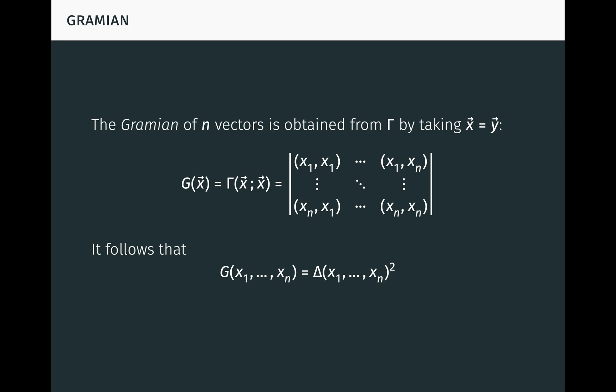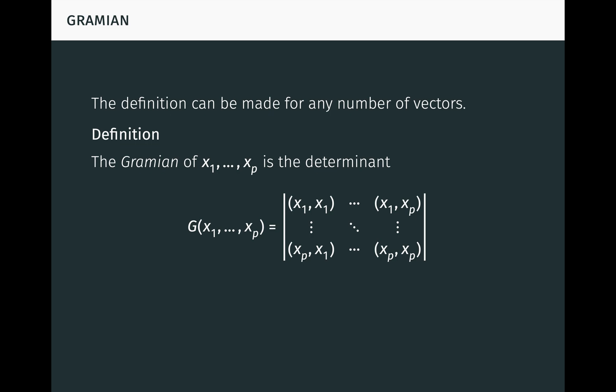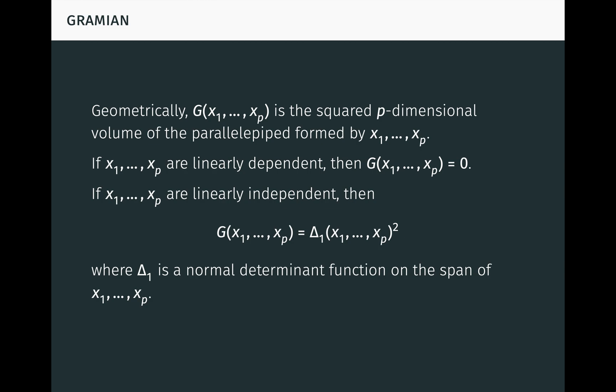So this is the Gramian of n vectors, where n is the dimension of the ambient space. But what about a different number of vectors? Importantly, the same definition can be made for any number of vectors. The Gramian of vectors x1 to xp, where p is not necessarily the dimension of the ambient space, is just the determinant of their inner products, as seen here. Note in particular that the Gramian of a single vector x is just the inner product of x with itself. Geometrically, the Gramian of x1 to xp is the squared p-dimensional volume of the parallelepiped formed by x1 to xp. If x1 to xp are linearly dependent, then the Gramian is zero, since its rows and columns are linearly dependent. On the other hand, if x1 to xp are linearly independent, then the Gramian of x1 to xp is delta₁ of x1 to xp squared, where delta₁ is a normal determinant function on the p-dimensional span of x1 to xp.